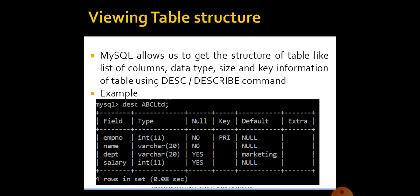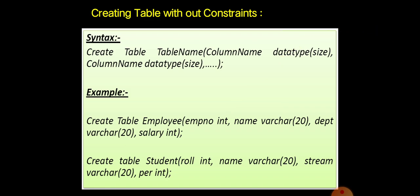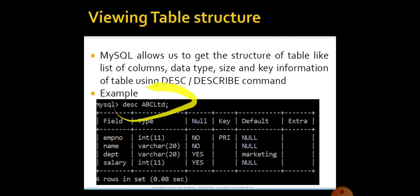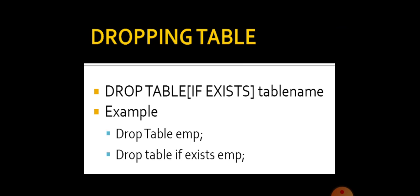I think you are all clear about how to view a table structure. After creating the table, you need to describe the table in the command prompt. Now, how to drop a table? DROP TABLE — that is DROP TABLE IF EXISTS table name. You can give IF EXISTS to check whether the table exists or not. DROP is a command, TABLE is a clause, and EMP is an argument — EMP is the name of the table. You can also include the clause IF EXISTS. After checking whether it is existing or not, it will be deleted from the database.